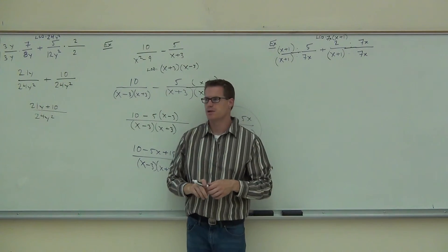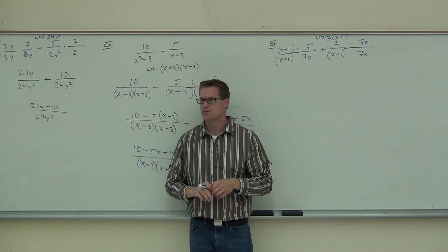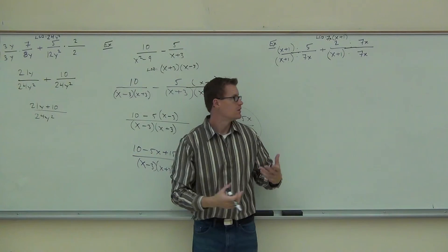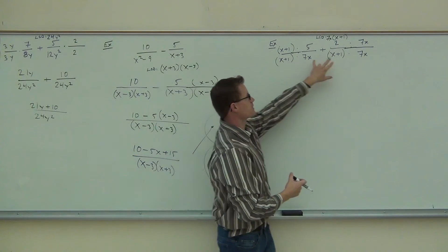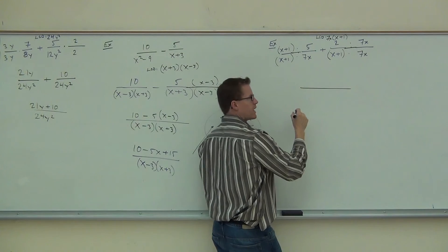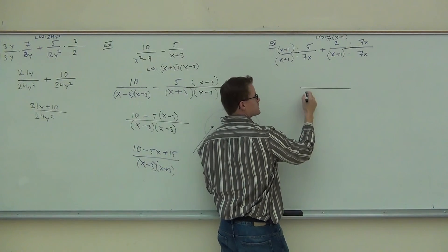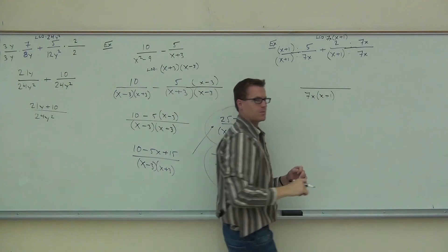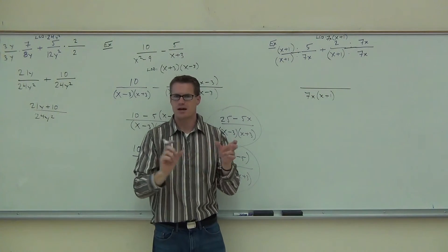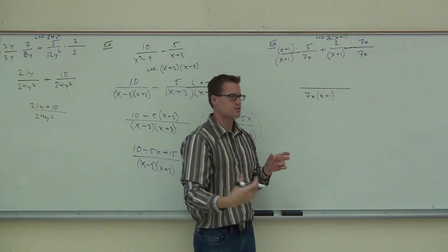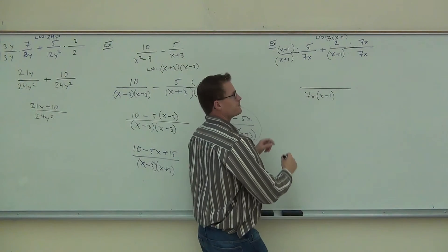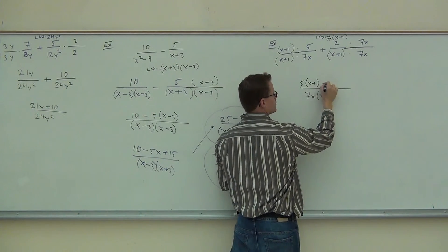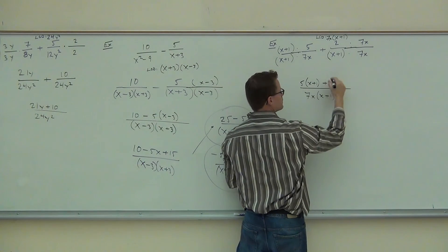Do I now have a common denominator? Yes—it has all the factors. I'll write it as 7x times x plus 1, since multiplication is commutative, it doesn't matter the order. On the numerator, I'll write 5 times x plus 1, plus 14x.